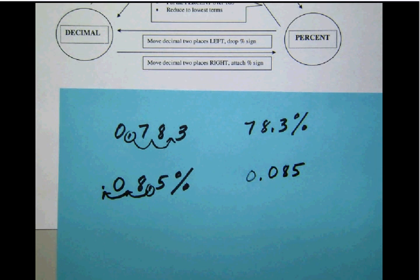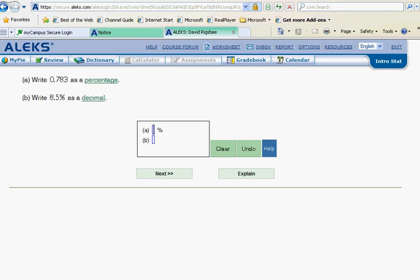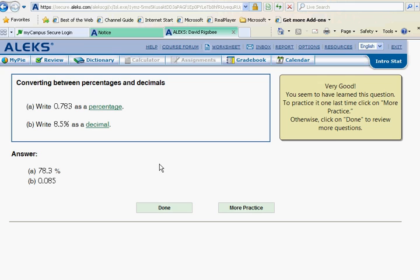So let's go back to ALEKS, enter that answer, and check it. The first 78.3 percent. And in the other, we will have the decimal 0. They like the 0 to the left of the decimal, 0, 85. Let's check that. Okay. These are converting between percentages and decimals in statistics.